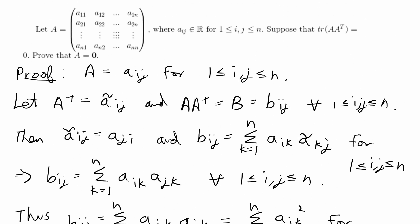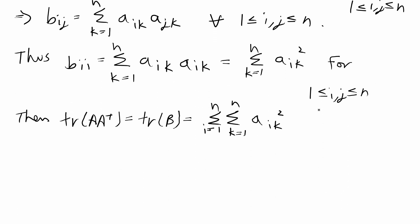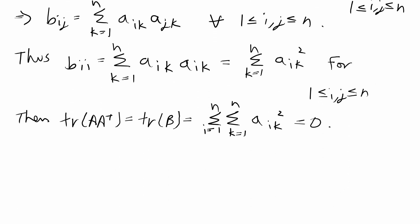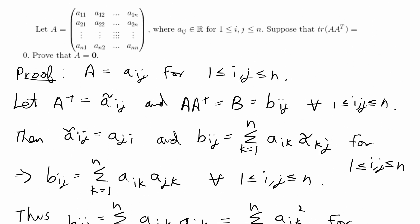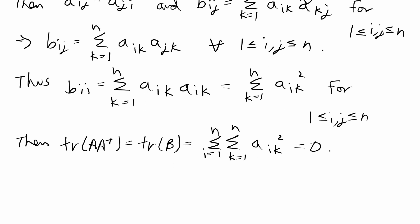We are given in the problem that this trace has to be equal to zero, so this double summation has to equal zero. We're trying to prove that A_ij for any i and j has to be equal to zero.